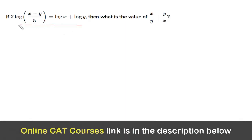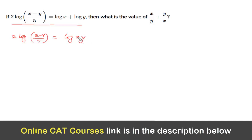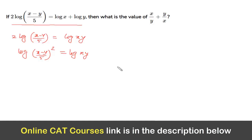We have been given an expression in log and we need to find the value of x/y + y/x. Let us simplify: we can write it as 2·log((x − y)/5) = log(x·y), because log a + log b = log(a·b). We can then bring the 2 inside as a power, giving log((x − y)/5)² = log(x·y).